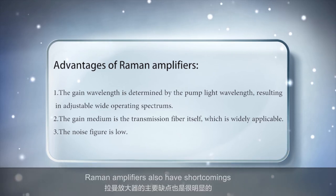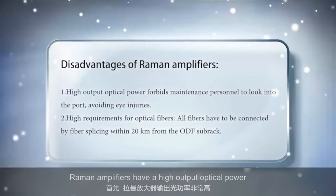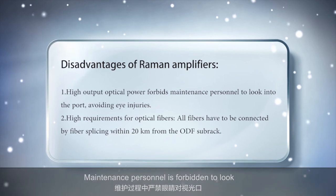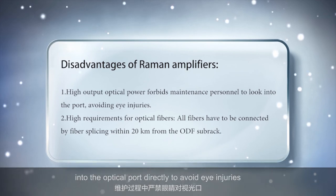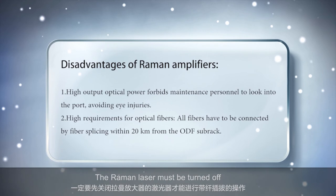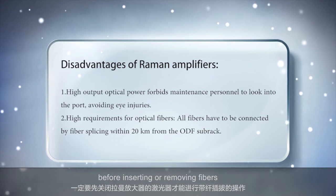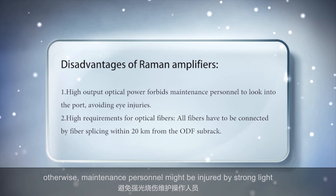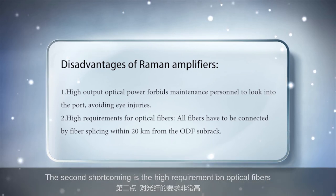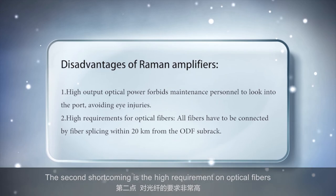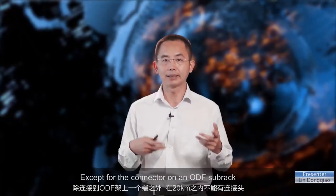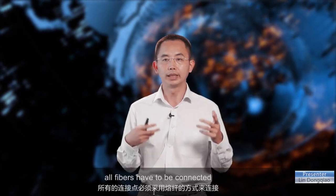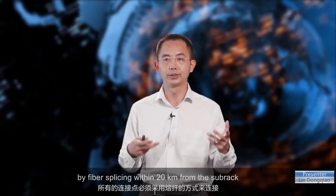Raman amplifiers also have shortcomings. Raman amplifiers have a high output optical power. Maintenance personnel are forbidden to look into the optical port directly to avoid eye injuries. The Raman laser must be turned off before inserting or removing fibers; otherwise, maintenance personnel might be injured by strong light. The second shortcoming is the high requirement on optical fibers — except for the connector on an ODF subrack, all fibers have to be connected by fiber splicing within 20 km from the subrack.